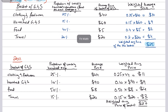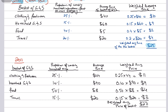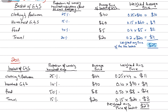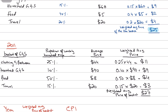The average prices have gone up: clothing and footwear went from $40 to $44, household goods and services from $60 to $90, and food from $5 to $8. Traveling remained at $20, though the household expenditure weights changed. So: 0.25 × $44 = $11; 0.10 × $90 = $9; 50% of $8 = $4; 15% of $20 = $3. Adding these up gives a weighted average price of $27 for the 2011 basket.